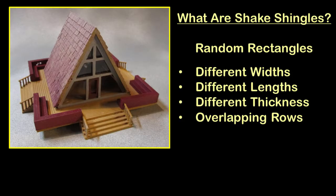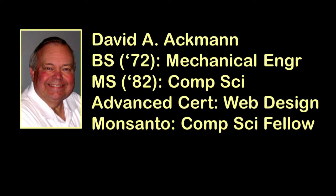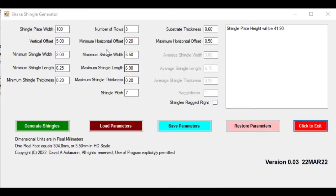It started when I wanted to create shake shingle roofing. I realized that such an organic shape was just a bunch of rectangles with random variations in size and placement. As someone with a background in computer science, I wrote a program that runs under Microsoft Windows to collect the specifications for the roof I wanted.